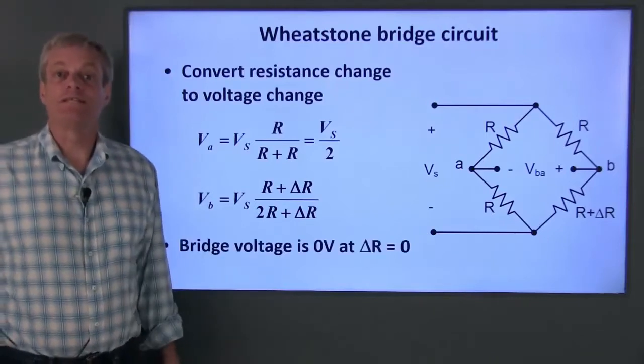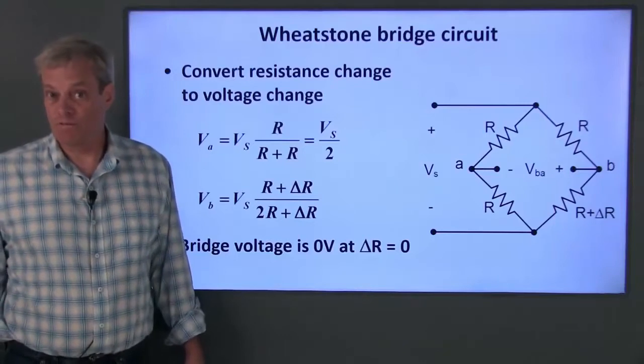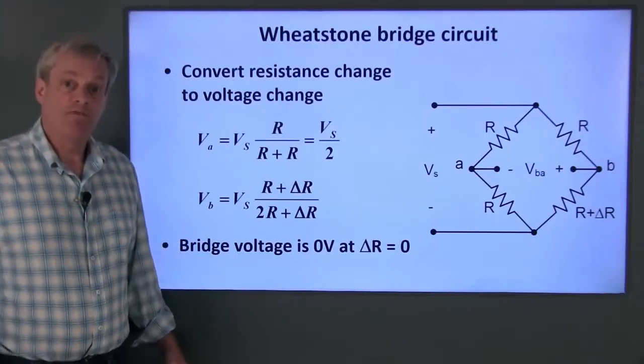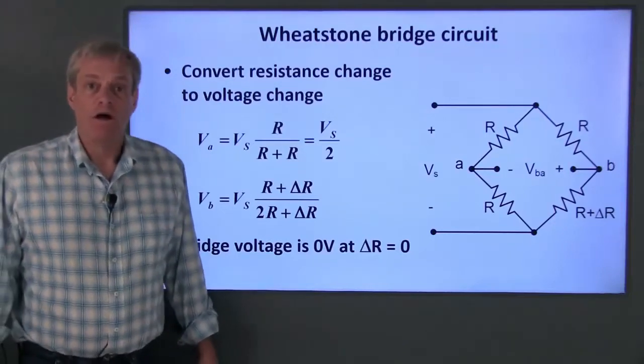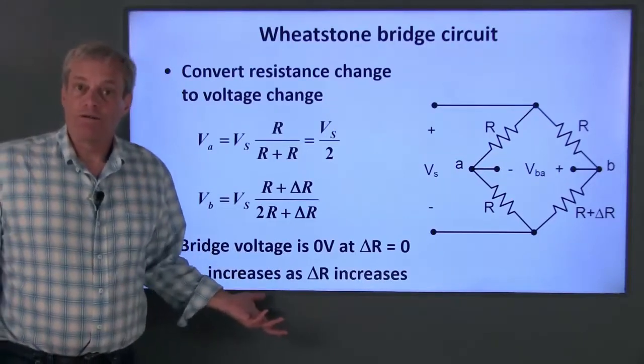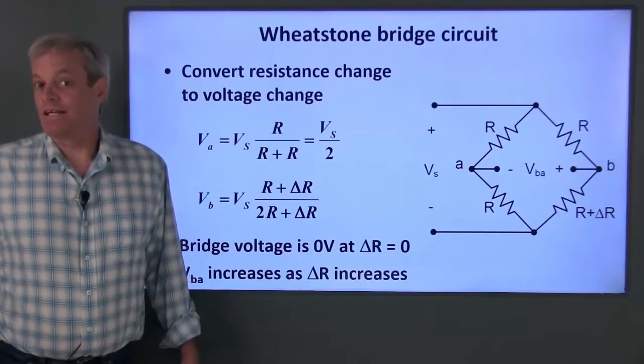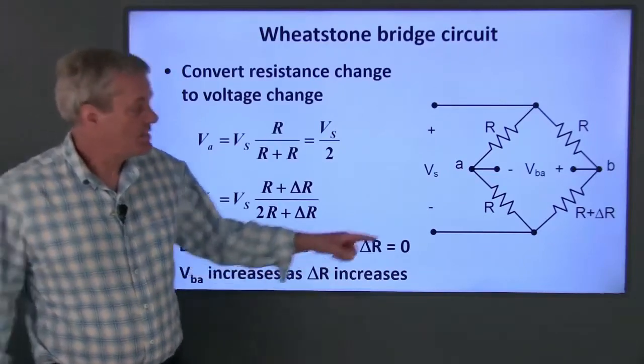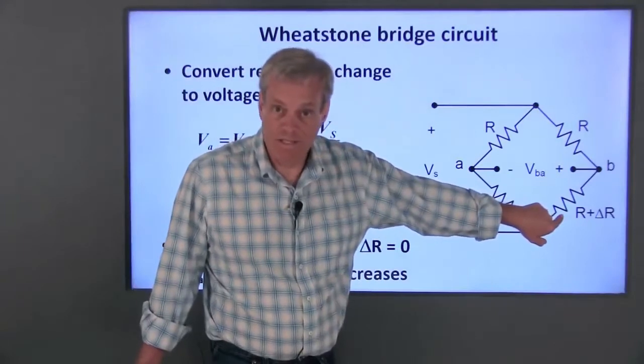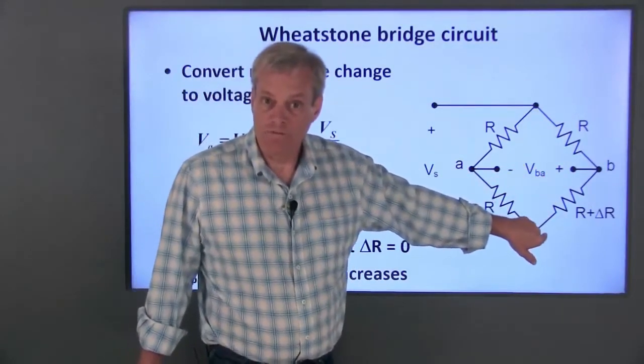From these relations, we can see that if delta R is zero, V sub A and V sub B are both V sub S over 2 and the voltage difference V sub BA is zero. Also, since V sub B increases as delta R increases, the voltage difference V sub BA increases as delta R increases. So if we put our sensor here as the variable resistance, we can get an output voltage that changes with the sensor's resistance.